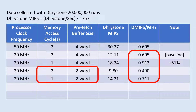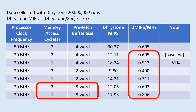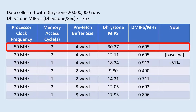Looking at these numbers, I was wondering if I could improve the Dhrystone numbers by increasing the prefetch buffer length. So I went ahead and made the design change to increase the prefetch buffer length to 8. The Dhrystone numbers did not get better — in this case, four-word entry looked good enough. Instead of increasing buffer length, doing some branch prediction may be another way. I will come back and use the 50 MHz clock and two-cycle memory access for now.